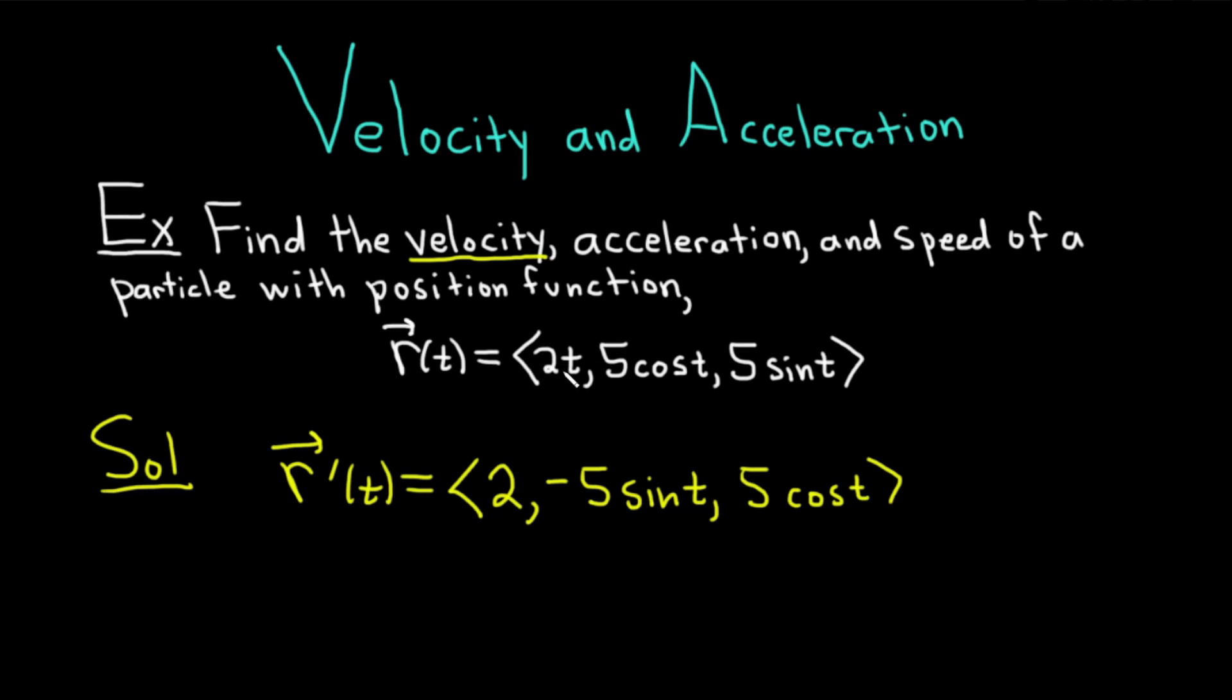So let's just check that. We took the derivative of 2t, we got 2. Derivative of 5cos(t) gives us -5sin(t). Yep. Derivative of 5sin(t) is 5cos(t). Yep. That's good. So this is the velocity. You can also call it v(t) if you like. So v for velocity. That's a common notation that people use.